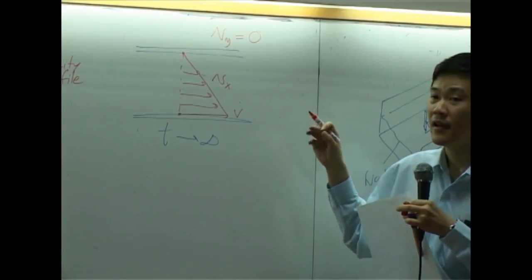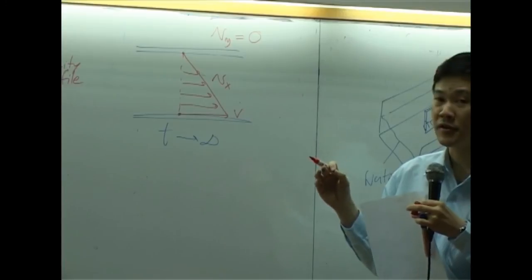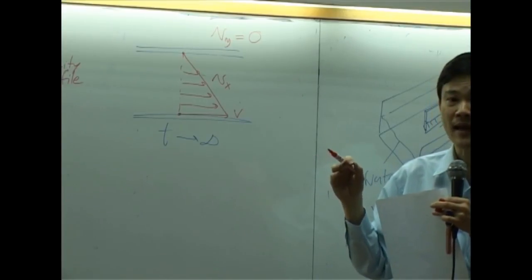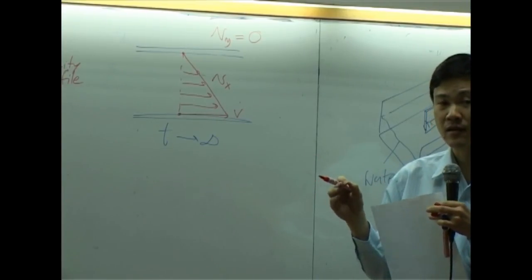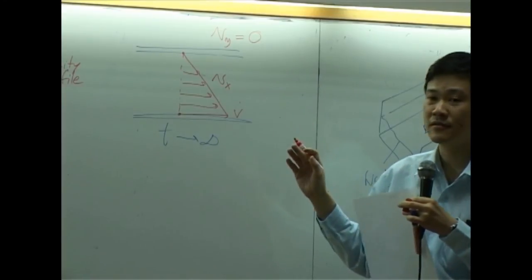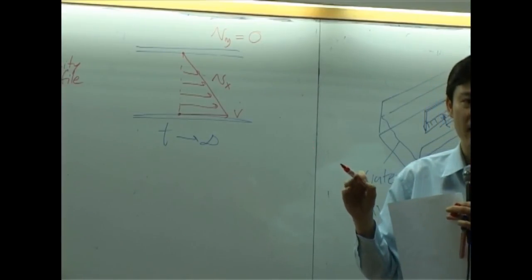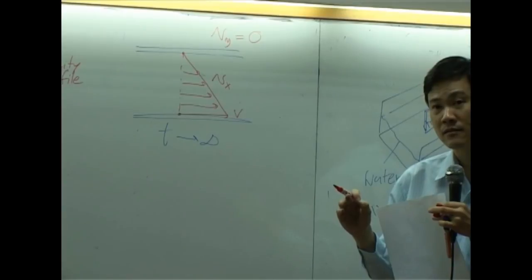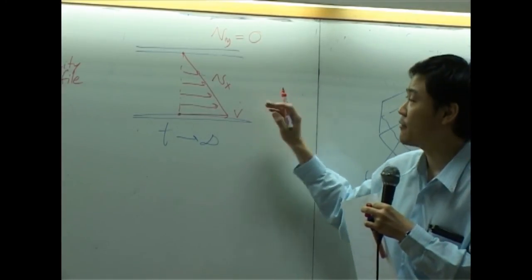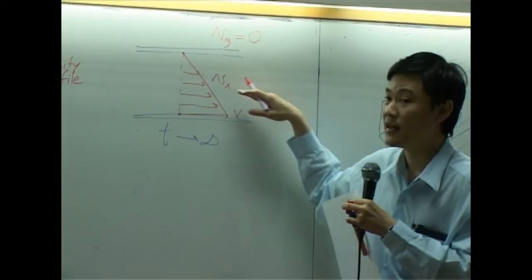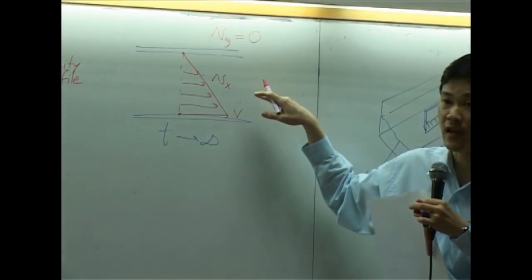Now, in this course, we will consider only system at steady state because simply, simply because unsteady state is too complicated mathematically. So, at steady state, you will have velocity in X direction. We call this one VX.